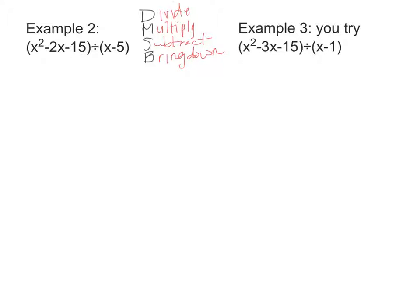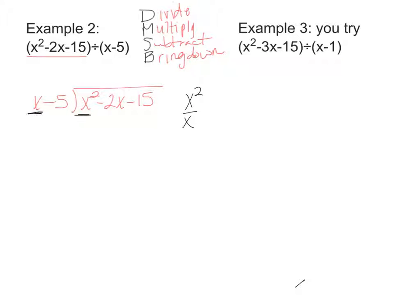So when we're dividing, the trinomial is what's going to go inside, and my X minus 5 goes outside. I'm going to ignore the other terms for now and just look at X squared divided by X, because that's what I can figure out right now. X squared divided by X — step 1 — is equal to X, and I'm going to line up my like terms, so X goes on top.